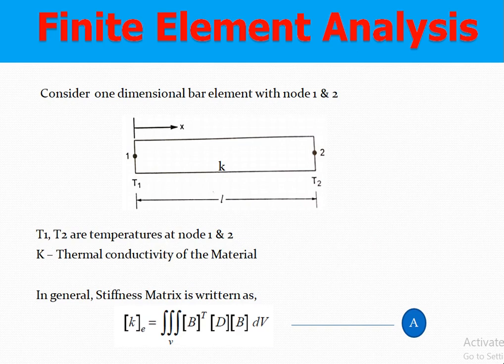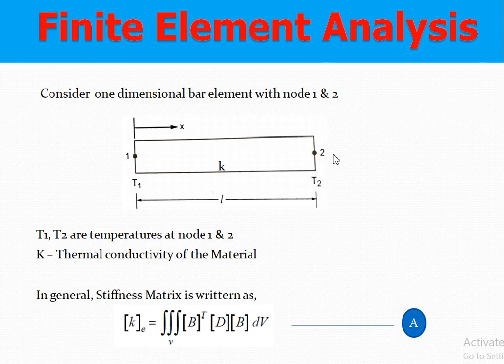Consider the one-dimensional bar element of length L. The thermal conductivity of the material is given. One end of the bar element is noted as node number one and the other end as node number two. The temperature at node one is T1 and at node two is T2. In the heat conduction problem, temperature is the major factor involved.